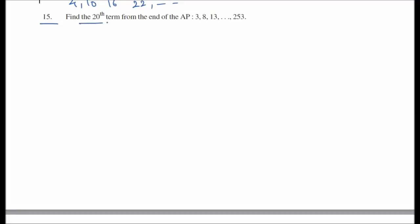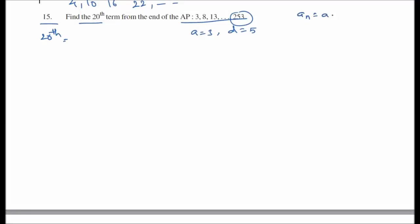Question 15: The AP is 3, 8, 13, ... 253. Here a equals 3, d equals 5. The last term is 253. First we find the total number of terms using a_n equals a plus (n minus 1) times d.